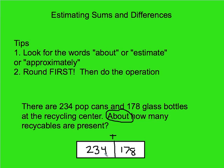I know that 234 is awfully close to 200 if I'm rounding to the nearest hundred. I know that 178 is also close to 200 if I'm rounding to the nearest hundred. That means there's going to be about 400 items present in the recycling center.